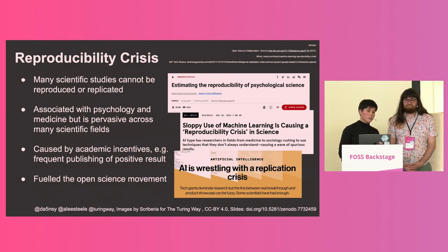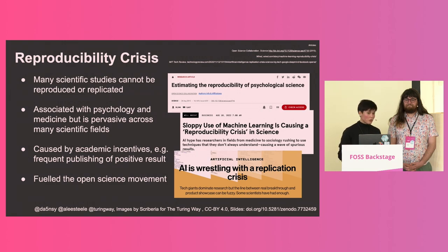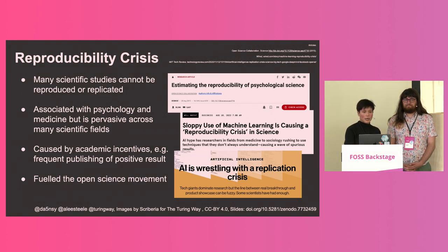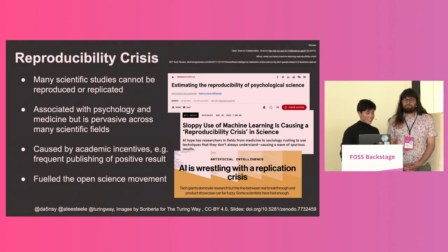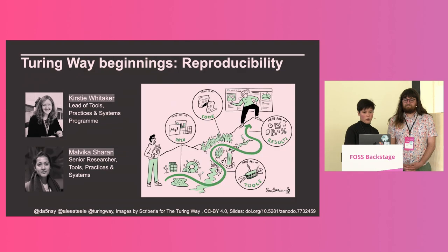Going back to the beginning of the project, it really emerged in response to the crisis of reproducibility in science. Many scientific studies cannot be reproduced or replicated — especially associated with the field of psychology, but pervasive across many other scientific fields. We see a similar crisis in data science and emerging AI, and this fueled the open science movement. It was in this spirit that the Turing Way was created.